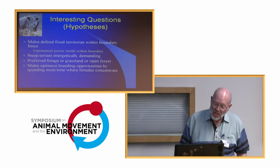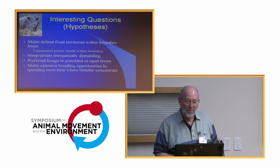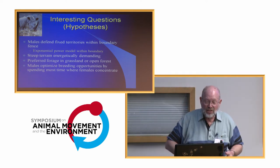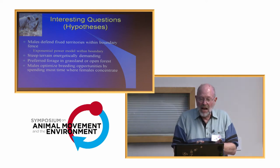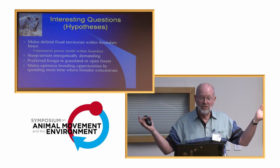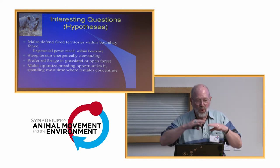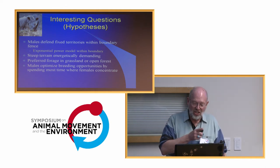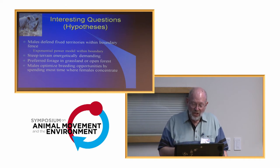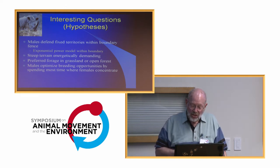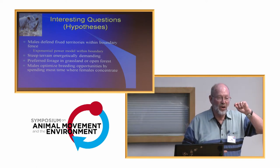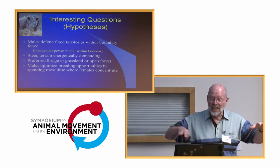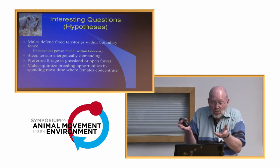So we talked about those for the rhino. Males defend fixed territories within a boundary fence — so we define the XY coordinates to only include within the boundary fence. No probability of use outside. It solves the kernel boundary problem. We thought the exponential power model would be best, and we test that. Steep terrain via slope, preferred forage via NDVI, and males optimize breeding opportunities by spending most time where females concentrate. Janet recorded XY coordinates of females, giving us a great kernel density map. That's a perfect use of kernels — it estimates density.